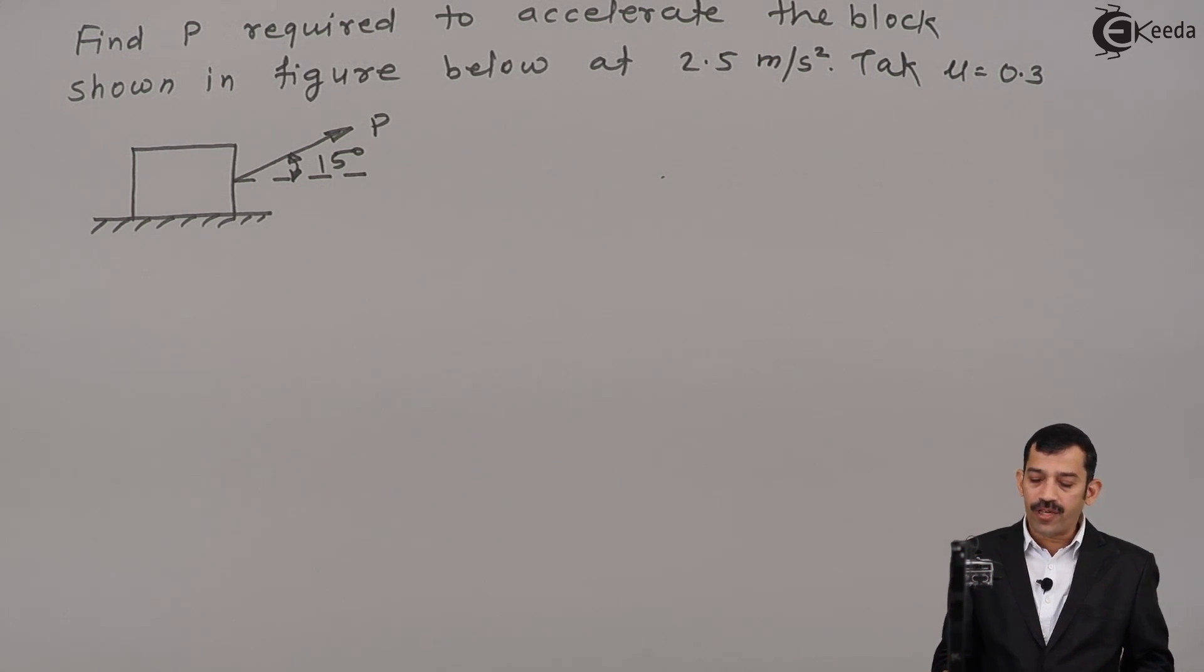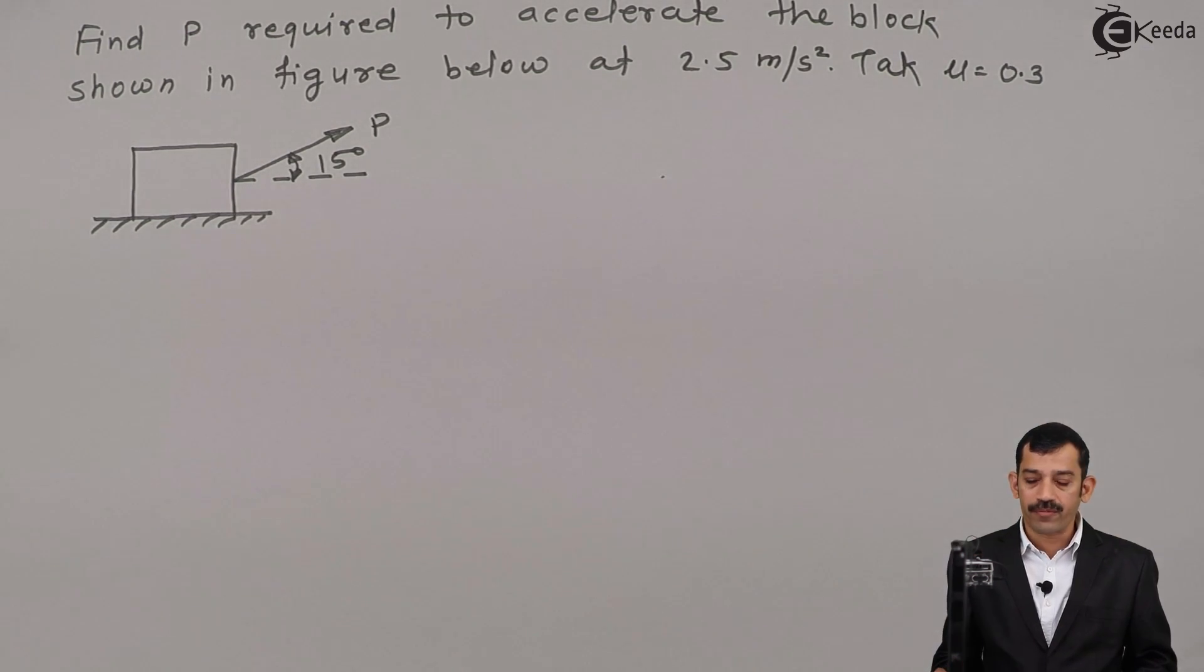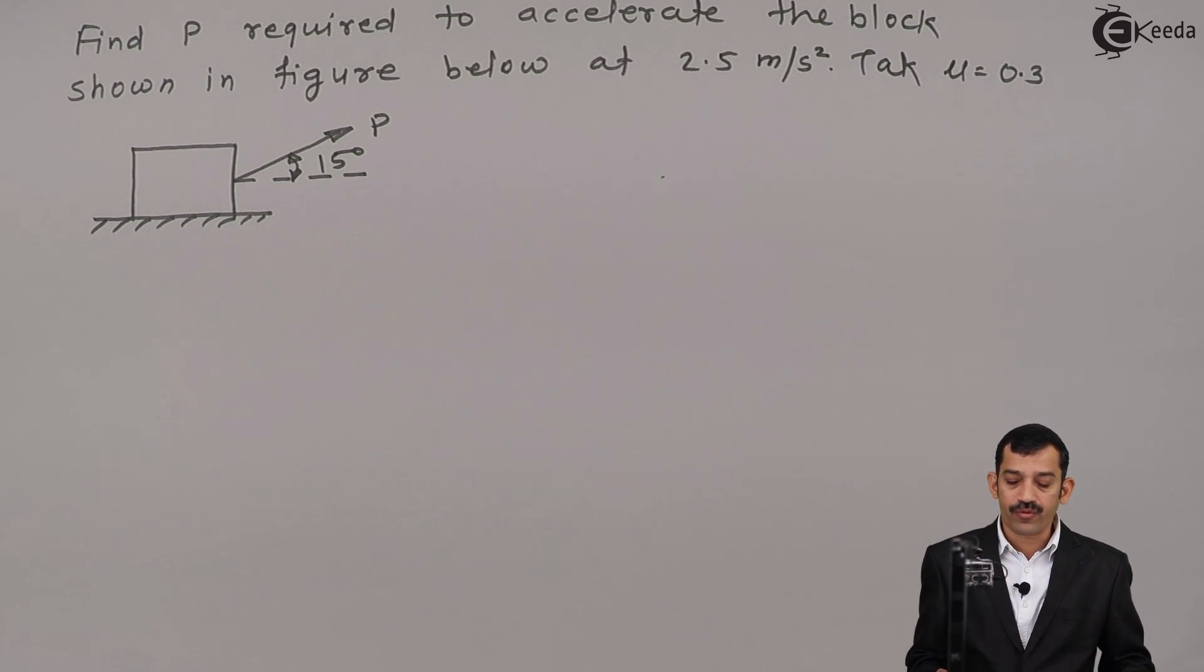Find P required to accelerate the block shown in figure below at 2.5 meter per second square. The acceleration of the block is given as 2.5 m/s². For this acceleration, what should be the magnitude of force P?